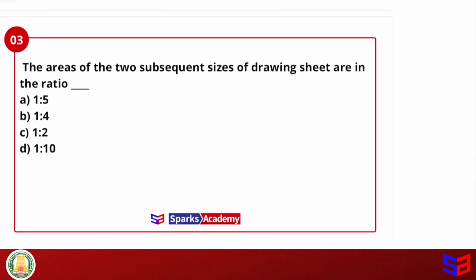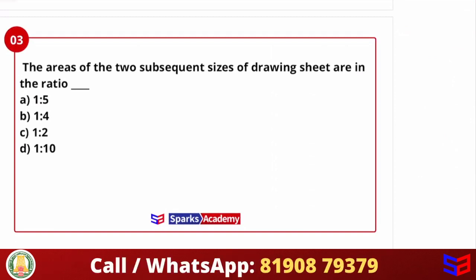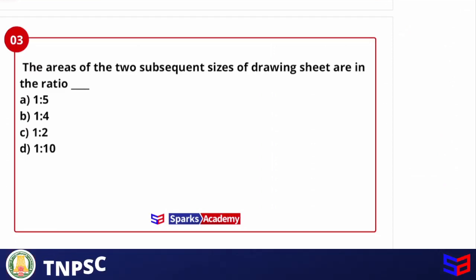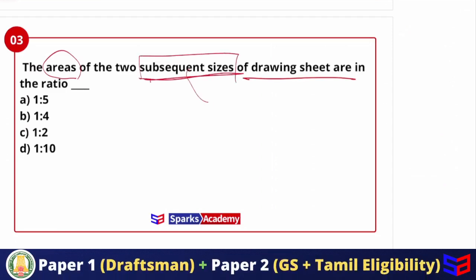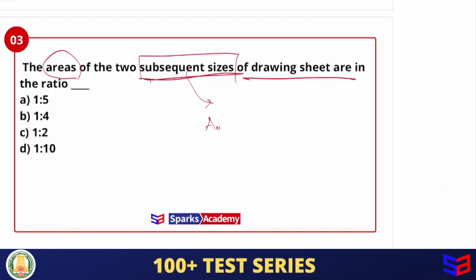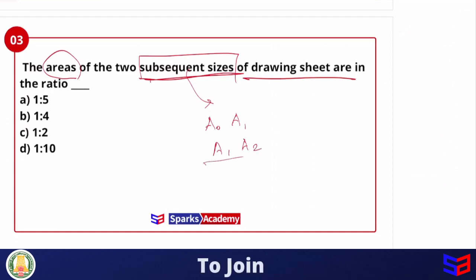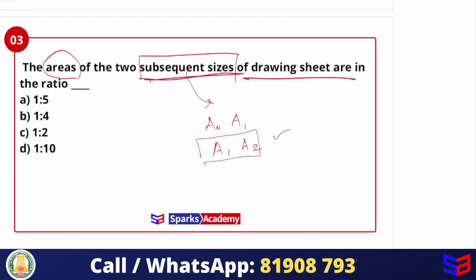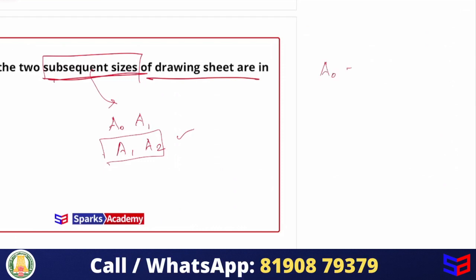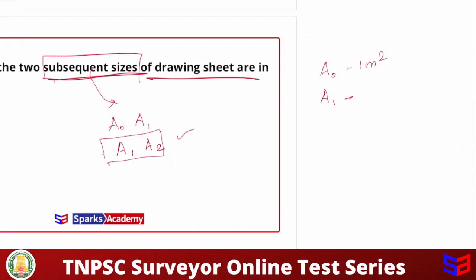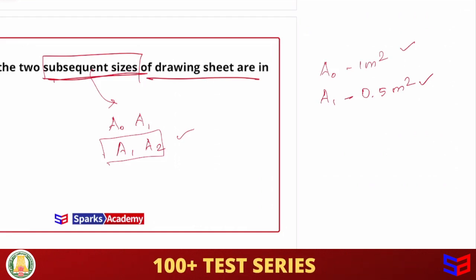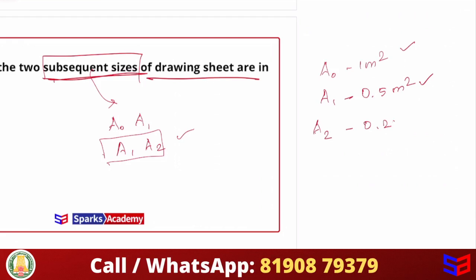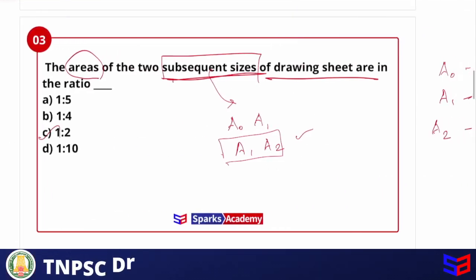Next question: the areas of two subsequent sizes of a drawing sheet are in the ratio — options are 1:5, 1:4, 1:2, and 1:10. Considering subsequent sizes such as A0, A1, A2, the ratio of their areas is 1:2. So the answer is 1 is to 2.